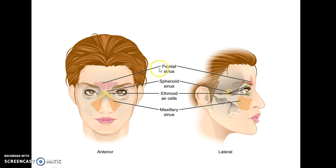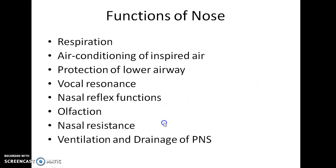There are four pairs of paranasal sinuses. They are the frontal sinuses, sphenoid sinuses, ethmoidal air cells, and maxillary sinus.